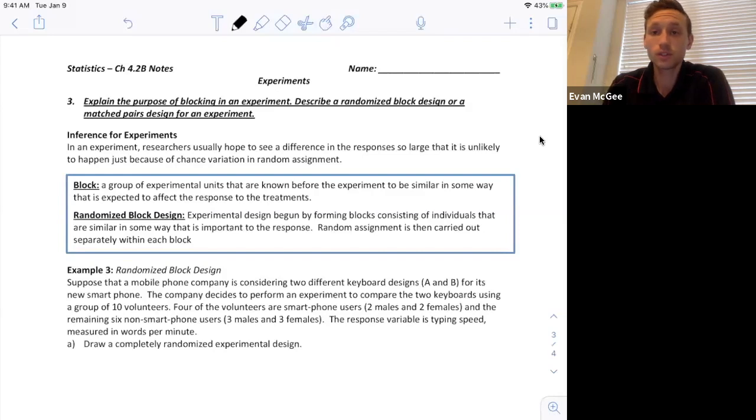This is the second 4.2b video. We're going to look at a new experimental design. It's called a randomized block design and I will explain what that is and then I'll talk about a matched pairs design which is a special type of block design.